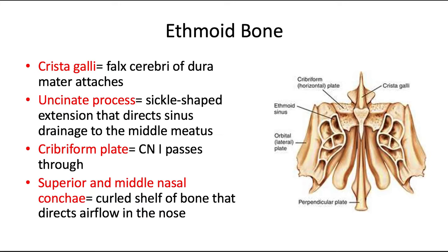Let's unpack the ethmoid bone a little more, as it's somewhat hidden within the skull. This is an aerial view of the ethmoid — it kind of looks like an aerial view of a dragon with its wings spread out. Some noteworthy parts include the crista galli, which stands for 'crest of the rooster,' a crest that sticks up where the falx cerebri of the dura mater attaches.